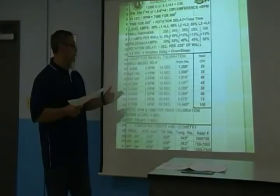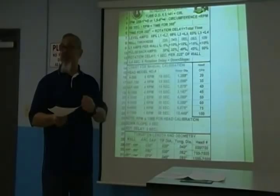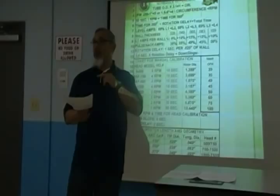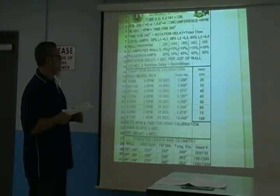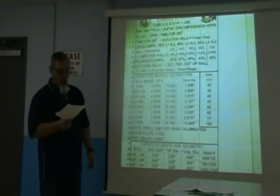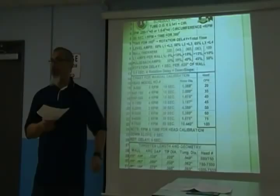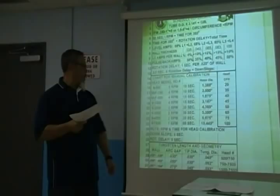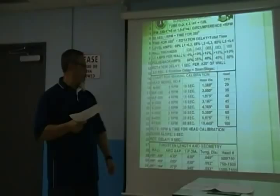I'd like to ask some specific questions to the class. Henry, if I wanted to know the rotor diameter — the rotor OD — for a 9-1500 head, what would be the right answer? 'It's on line 19 and it's 3.187 inches.' Correct. Does everybody see that? Very good.